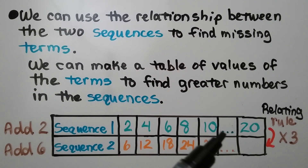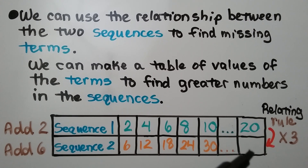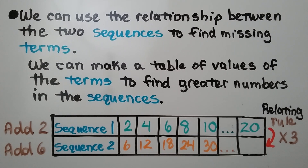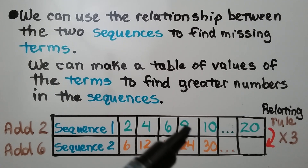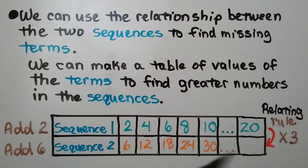When you see this dot, dot, dot, that's called an ellipsis. It means that we're jumping — from 10 to 20, and from 30 to some greater number related to 20. We know that if we multiply a term from sequence 1 by 3, we'll get the term for sequence 2. That means if we multiply 20 times 3, we'll get this unknown term, which would be 60.